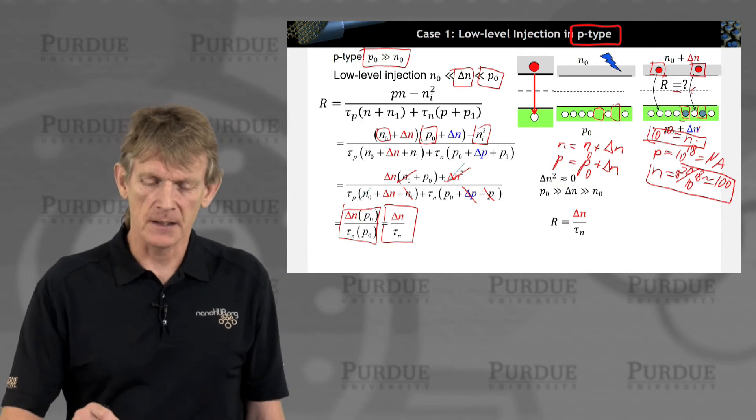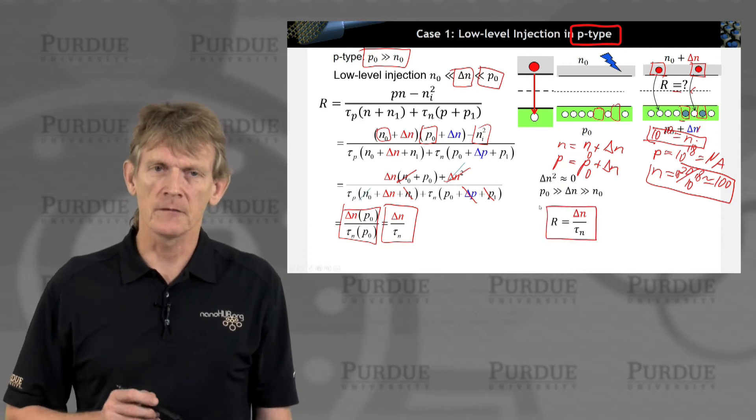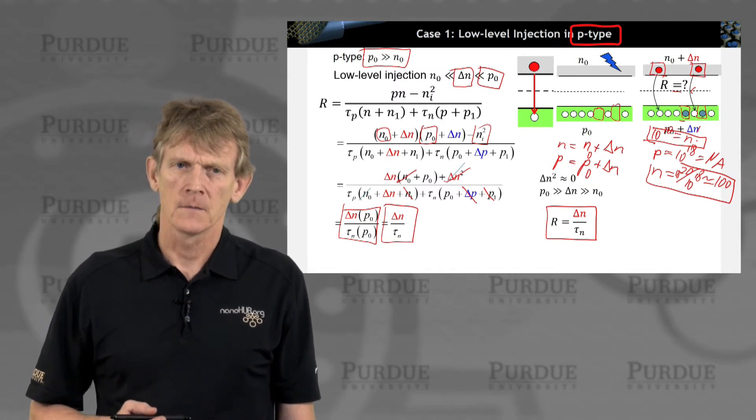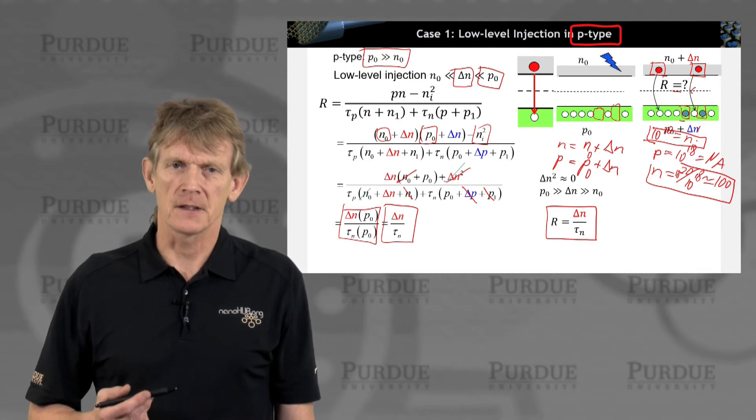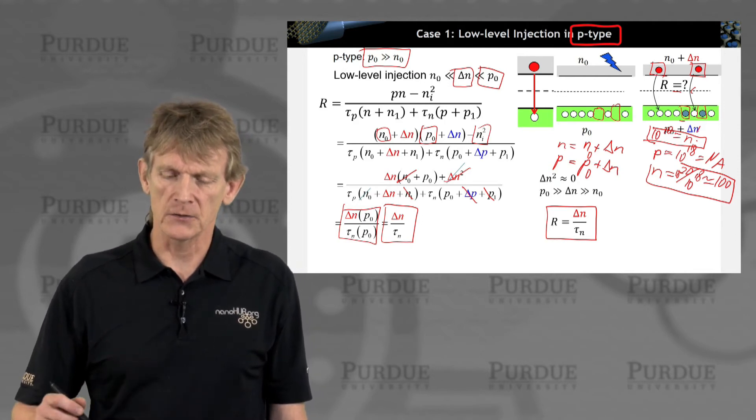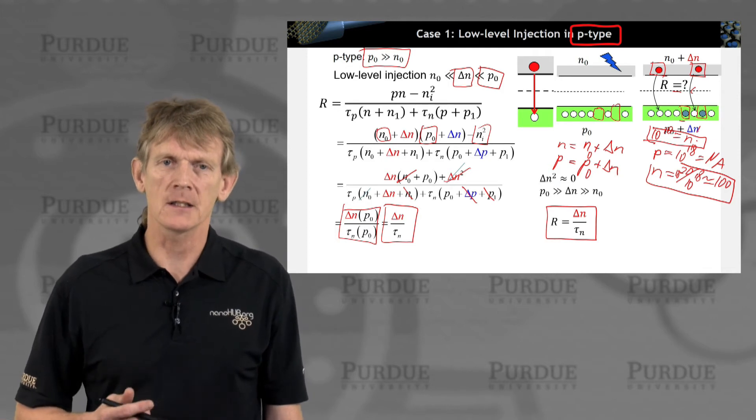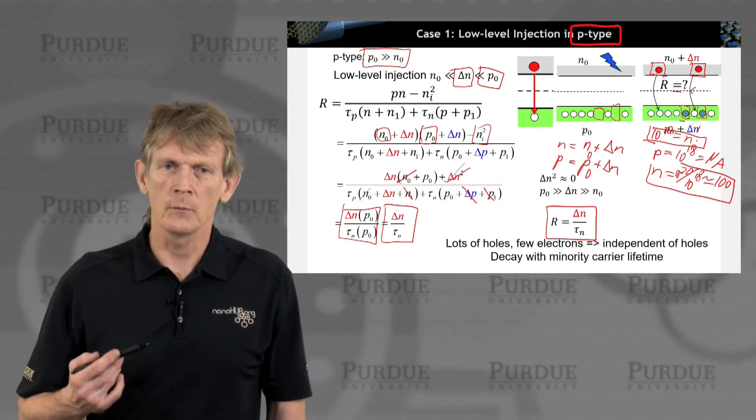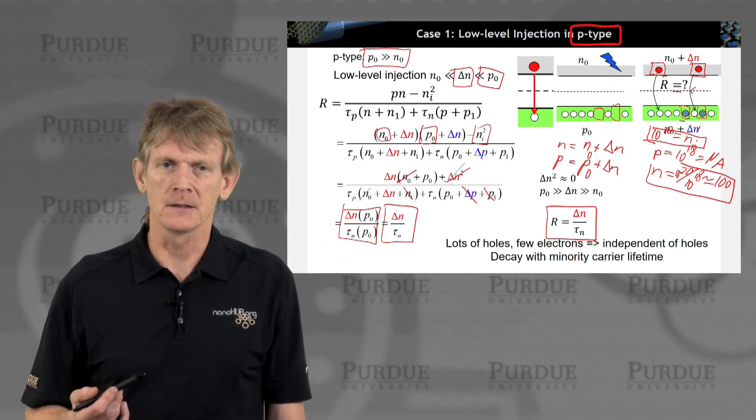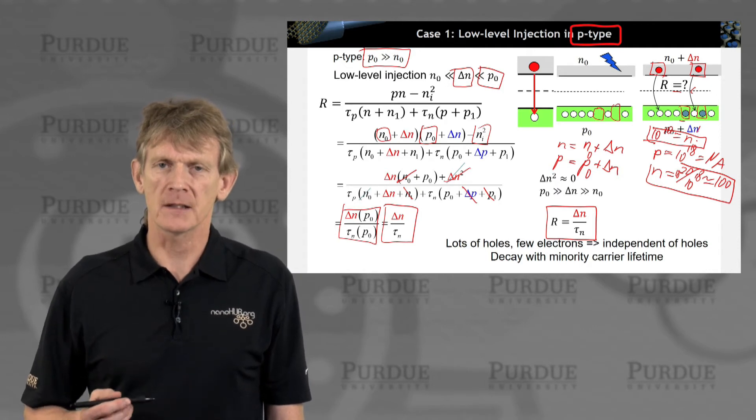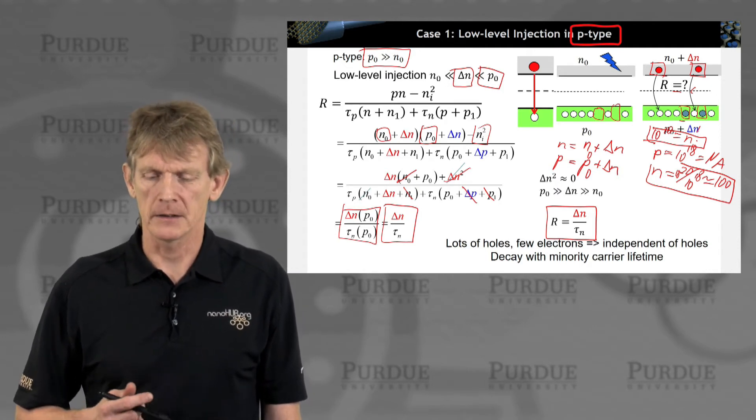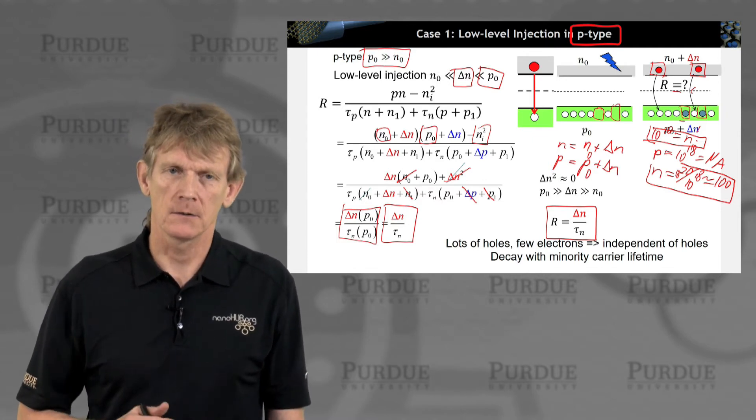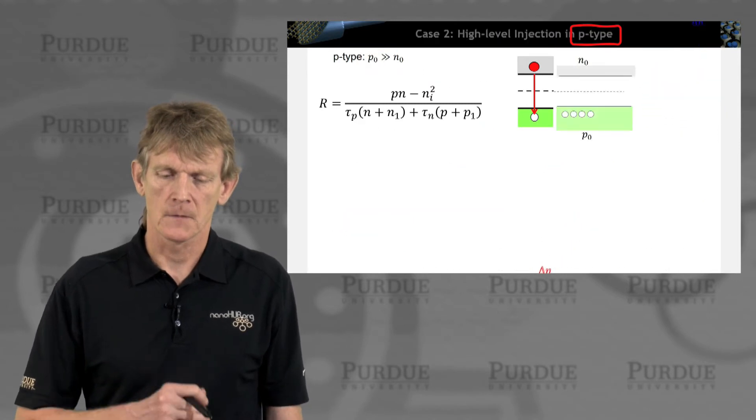So we have a recombination that is basically proportional to the number of extra carriers we introduced, delta n, divided by their lifetime, or their recombination rate. We talked about tau n being the minority carrier lifetime. So we have a few minority carriers being injected, and they decay with their respective minority carrier lifetime. Nothing fancy. Seems rather natural. Comes out of this, on top, pretty horrendous looking expression.